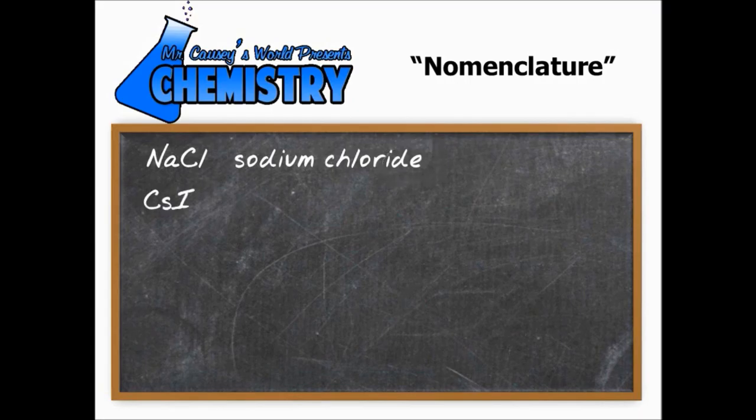Let's look at the next one. CsI. Cesium. And then we have the I which is iodide. Pretty straightforward. And both charges. Cesium is a plus one and iodine is a negative one. So they balance out. We're good.